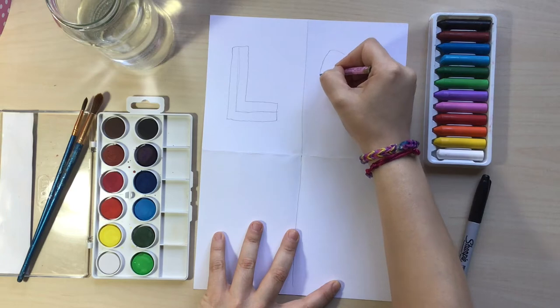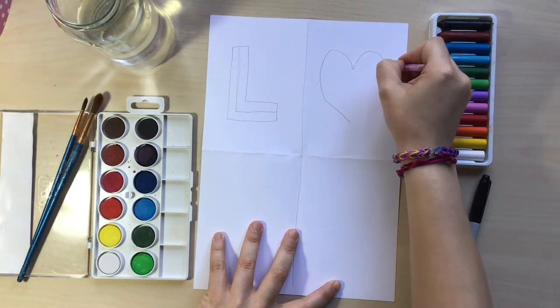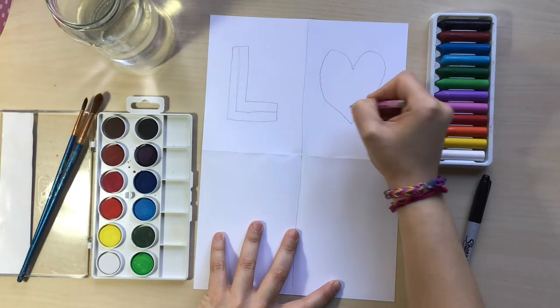Now I'm going to go for the O, but I want it to be a little bit more creative, and instead of drawing an O, I'm going to draw a heart. It's just going to look kind of like an O.